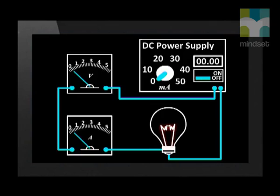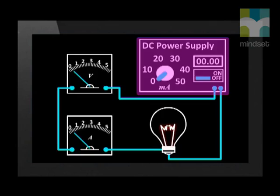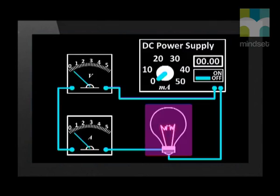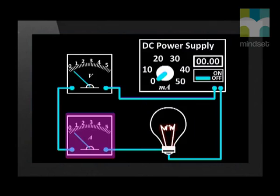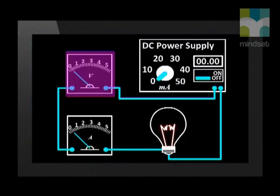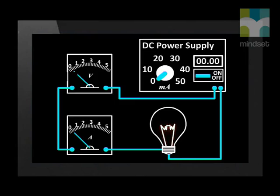Today we will investigate the relationship between the current through a light bulb and the potential difference across the light bulb. Here we have a simple circuit consisting of a direct current power supply, a light bulb, an ammeter, and a voltmeter. We'll slowly increase the current through the light bulb and then measure the potential difference across it as the current changes.